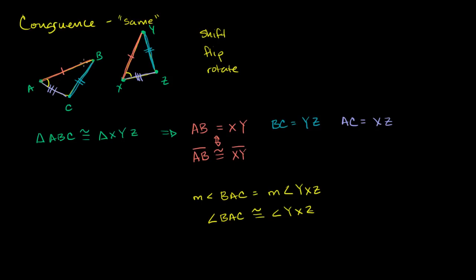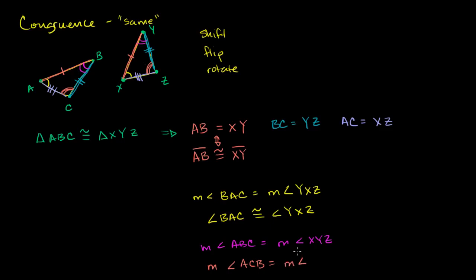We also know that these two corresponding angles have the same measure — I'll use a double arc to show that. So the measure of angle ABC is equal to the measure of angle XYZ. And finally, we know that this angle has the same measure as its corresponding angle, so the measure of angle ACB is equal to the measure of angle XZY. Now what we'll concern ourselves a lot with is how do we prove congruence? Because if you can prove congruence of two triangles, then all of a sudden you can make all of these assumptions.